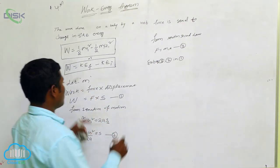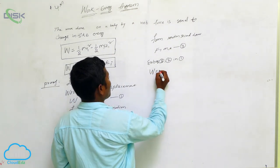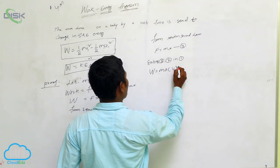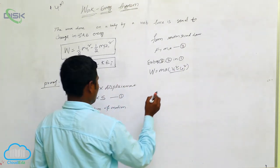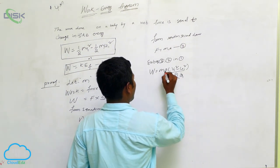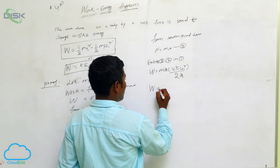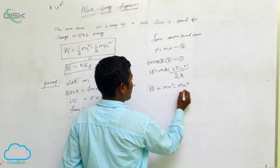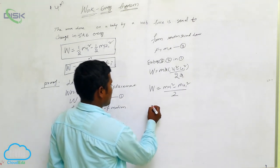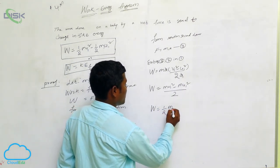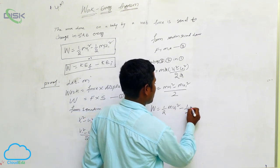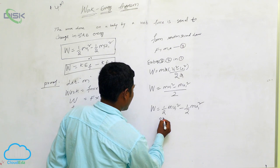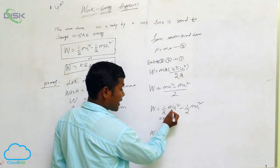Substituting: W = F × s = ma × (v² − u²) / 2a. The 'a' cancels out, giving: W = m(v² − u²) / 2, which simplifies to W = ½mv² − ½mu².